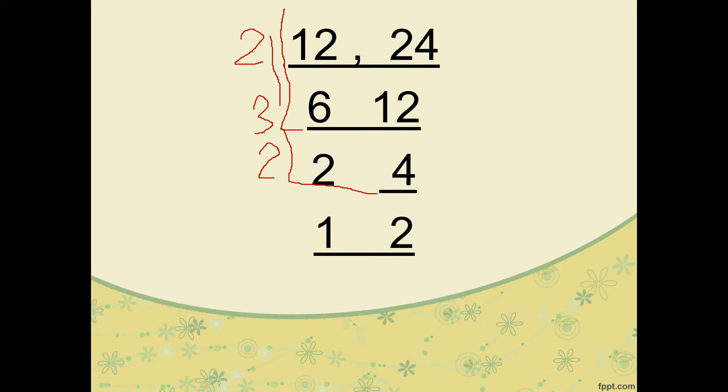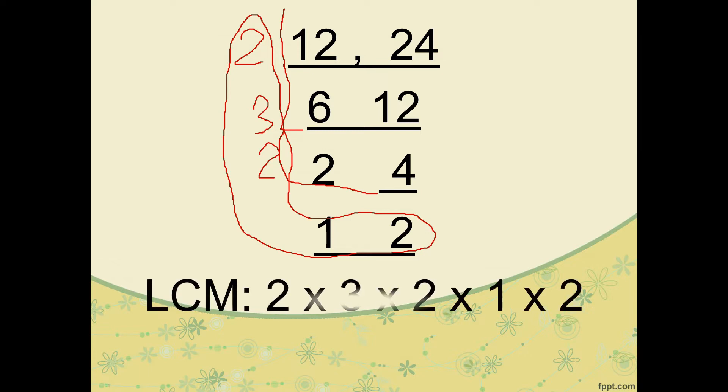Given the numbers at the left, we will multiply it to find the LCM. We take the L-shaped numbers. For GCF, it's only the side. So the LCM is 2 times 3 times 2 times 1 times 2. 2 times 3 is 6, times 2 is 12, times 1 is 12, times 2 equals 24. So the LCM of 12 and 24 is 24.